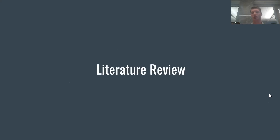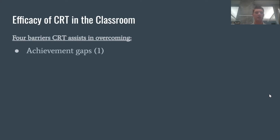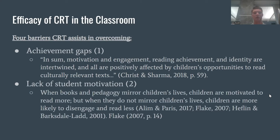Let's look at the literature that supports culturally relevant texts and its efficacy in the classroom. There are four barriers that culturally relevant texts assist in overcoming. Culturally relevant text helps overcome barriers such as the achievement gap and lack of student motivation. Student motivation, engagement, reading achievement, and identity are really all intertwined and are all positively affected by children's opportunities to read culturally relevant text. So if we want to increase achievement and student motivation, culturally relevant text is the way to overcome those barriers.